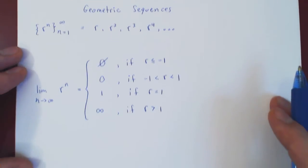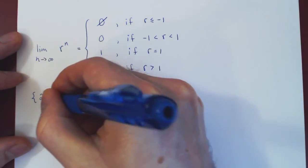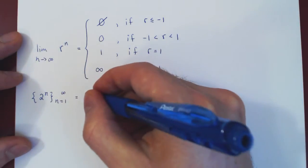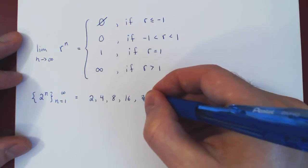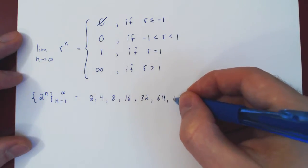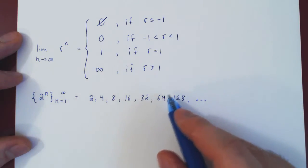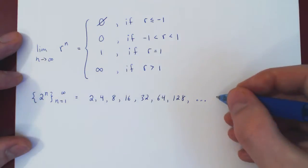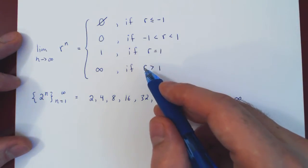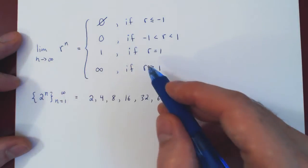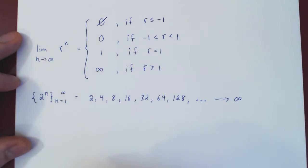What if r is larger than 1? Suppose r is 2. We look at the geometric sequence 2 to the n as n goes from 1 to infinity. We'll have 2, then 4, then 8, 16, 32, 64, 128, and so forth. We can clearly see, as we move along the sequence, the terms are getting bigger and bigger — they double every step of the way. So the sequence clearly goes to infinity; it diverges by blowing up. The intuition is: if you take larger and larger powers of a real number bigger than 1, the real number gets bigger and bigger and goes out of bounds in the limit.